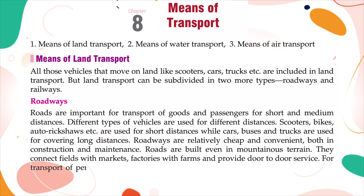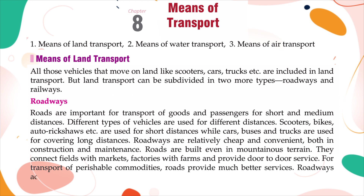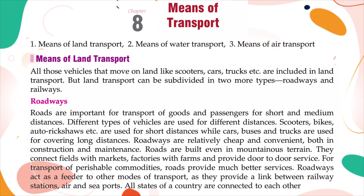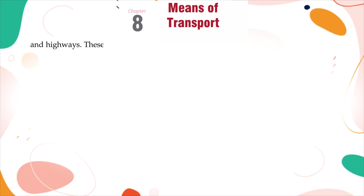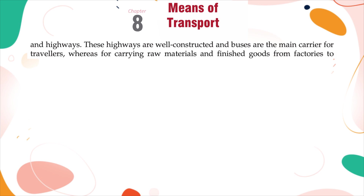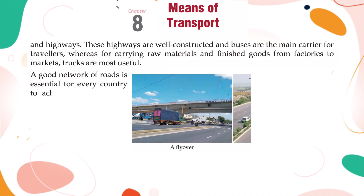For transport of perishable commodities, roads provide much better services. Roadways also act as a feeder to other modes of transport, providing a link between railway stations, air, and seaports. All states of a country are connected to each other by roads and highways. These highways are well-constructed, and buses are the main carrier for travelers. For carrying raw materials and finished goods from factories to markets, trucks are most useful. A good network of roads is essential for every country to achieve progress.